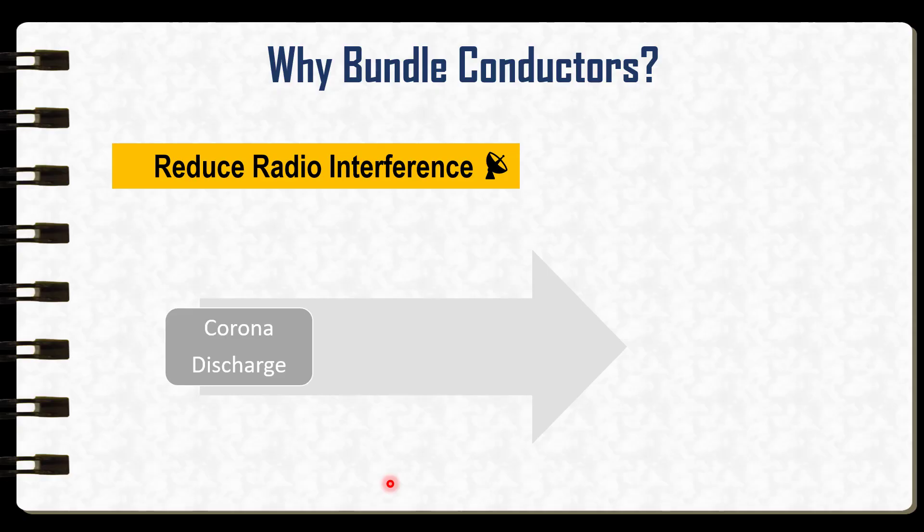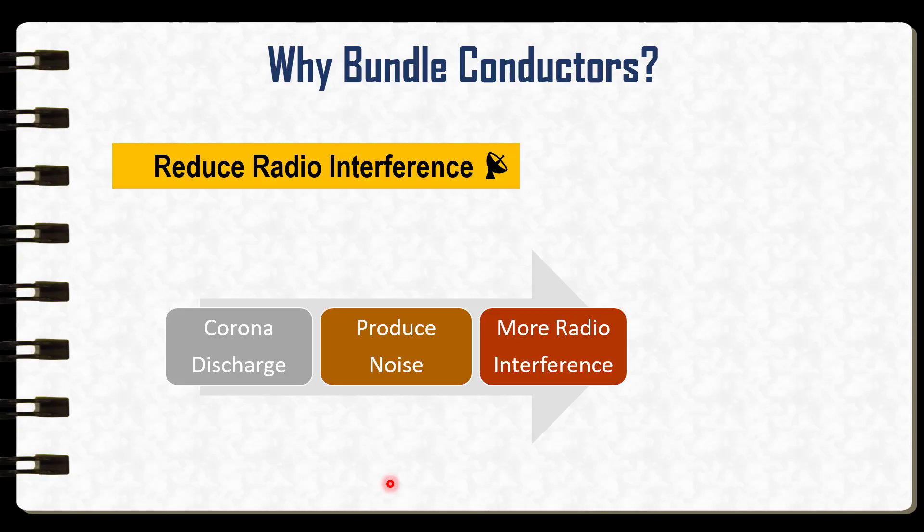Last but not the least, corona discharge not only wastes power, but also produces noise that interferes with nearby radio and television signals. Since bundle conductors reduce corona, they also reduce this unwanted interference, improving power quality.